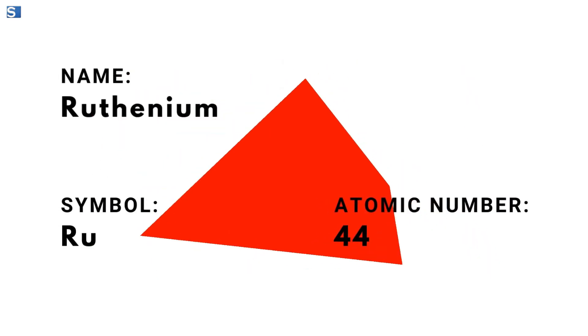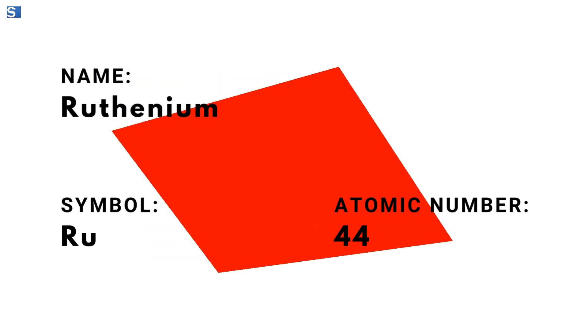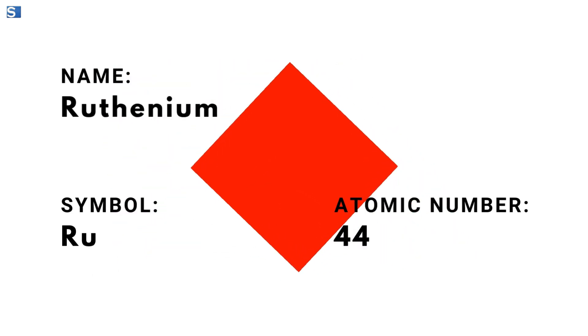Meet ruthenium, one of the rare and remarkable elements in the periodic table with the symbol Ru and atomic number 44.